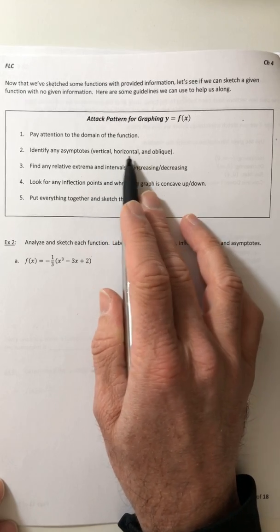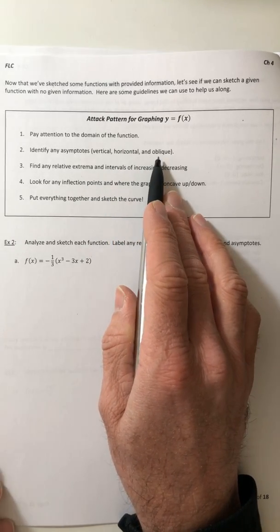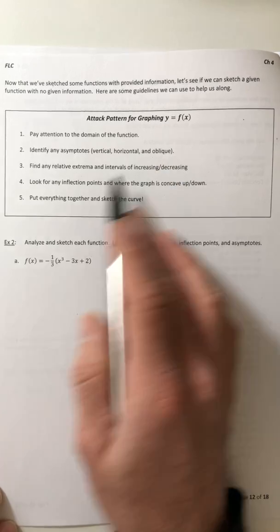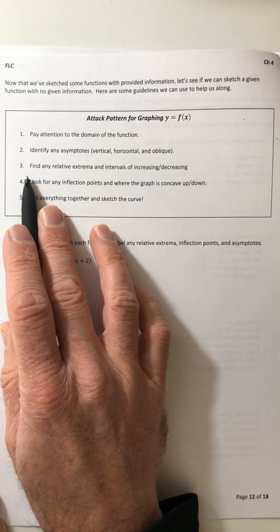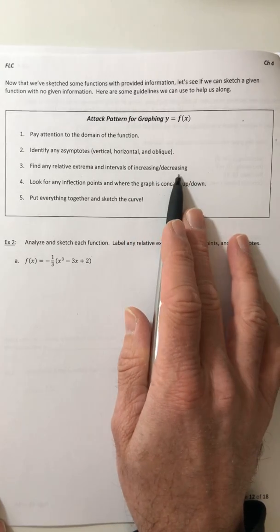So with horizontal, that means you're taking the limit, and then possibly an oblique. Okay, number three, find any relative extrema and intervals of increasing, decreasing.